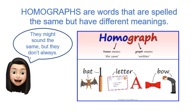Today we're going to think about homographs. Homographs are words that are spelled the same but have different meanings. We've already looked at homophones — homophones are words that sound the same but they're not spelled the same and they don't mean the same thing, such as 'hear', H-E-A-R, and 'here', H-E-R-E. I hear with my ear, and I am here at school. Those are homophones.